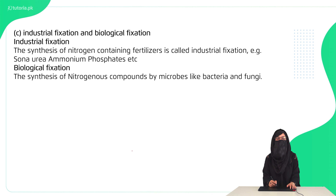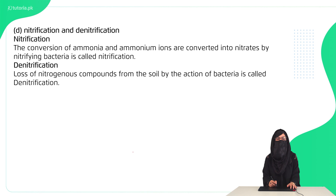If nitrogen is synthesized chemically, then it is industrial fixation. The difference between nitrification and denitrification: nitrification is the conversion of ammonia and ammonium ions into nitrate, while denitrification is the loss of nitrogen compounds from the soil into the atmosphere.